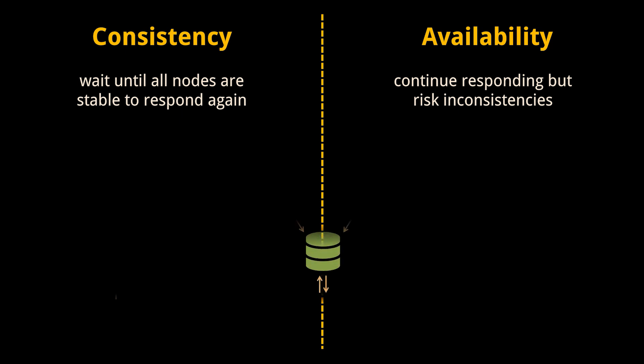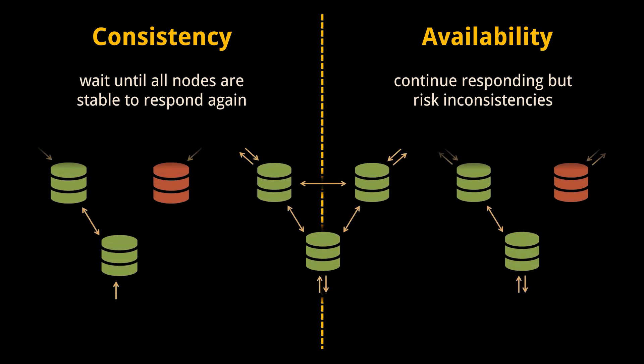A system is called a CP database if it provides consistency and partition tolerance, and an AP database if it provides availability and partition tolerance. Now that we've talked about the theoretical constraints of the CAP theorem, let's look at the fundamental unit of database operations: the transaction.